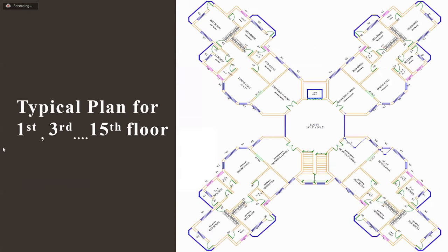This is the typical plan for the 1st, 3rd, and 15th floor — that is, the odd floors. Each tower has 16 residential floors. Each odd floor has four flats of 3BHK, as you can see. The lobby connects these four flats, and there is a lift with staircases opposite to it.